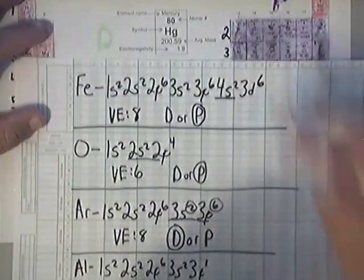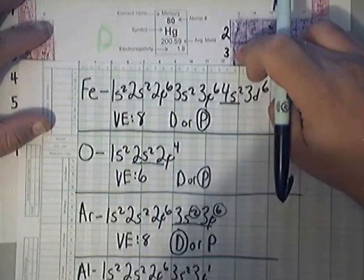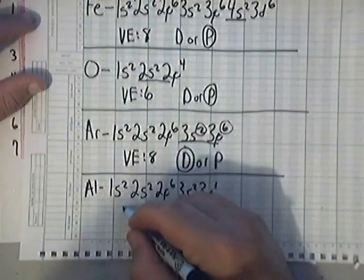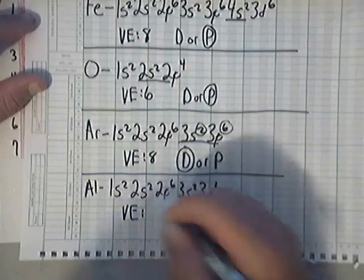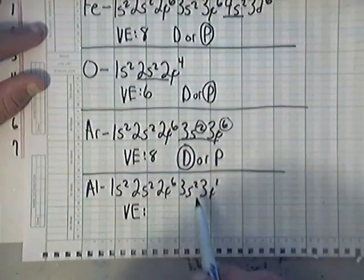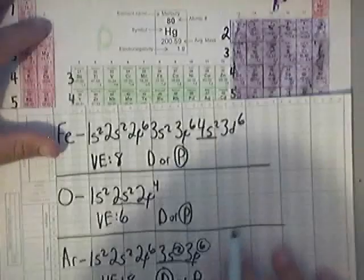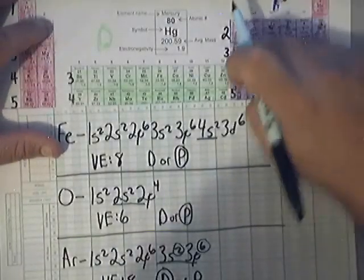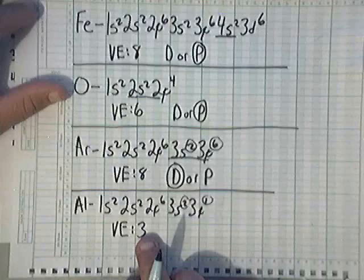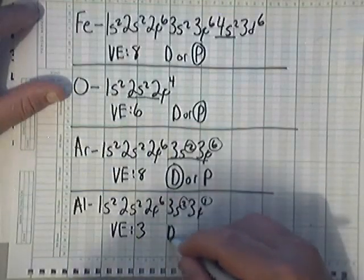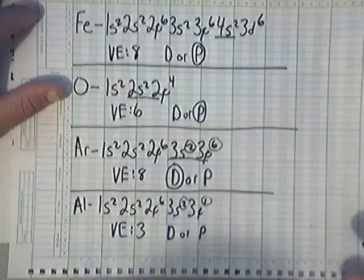Valence electron count, if you're looking here to have it on the periodic table, 2 plus 1 is 3. But notice the aluminum is in column 13, so that's why it's 3 valence electrons. As far as diamagnetic or paramagnetic, believe it or not, since the p is partially filled, it's paramagnetic.